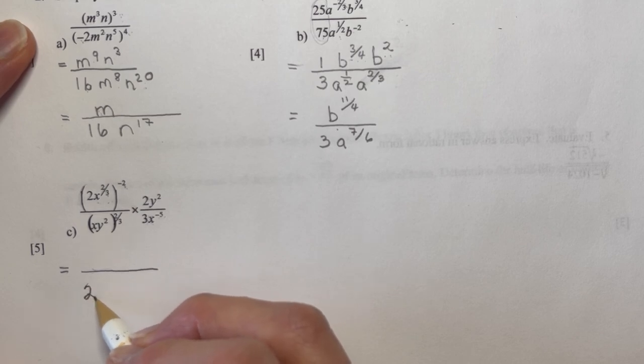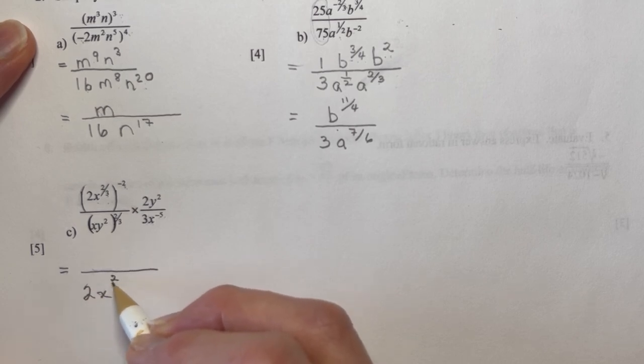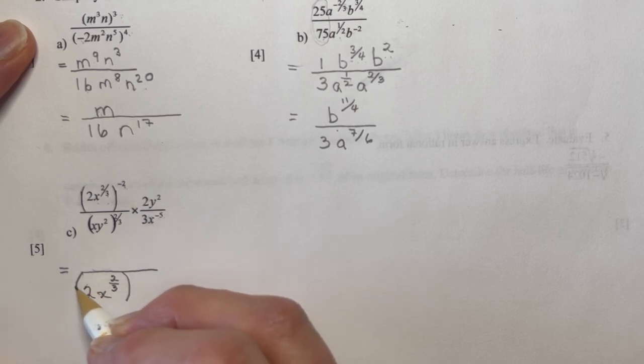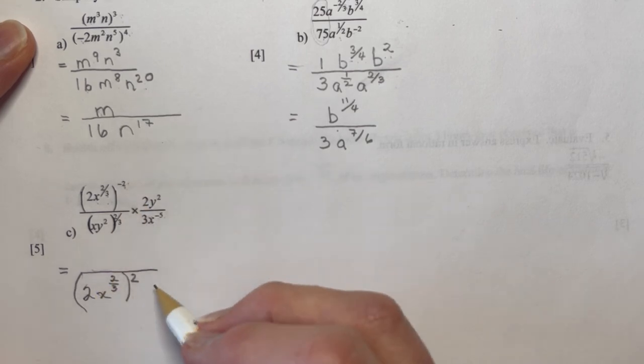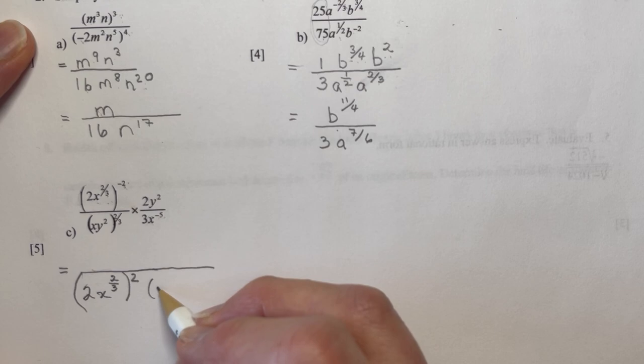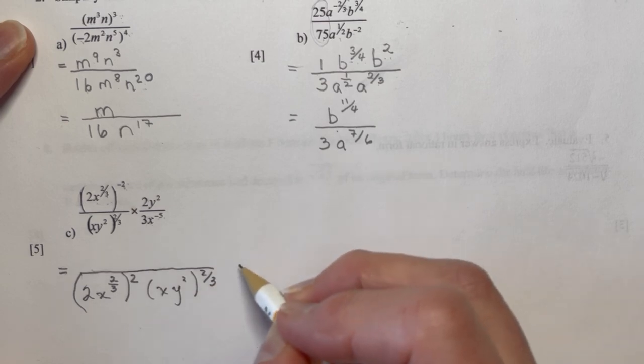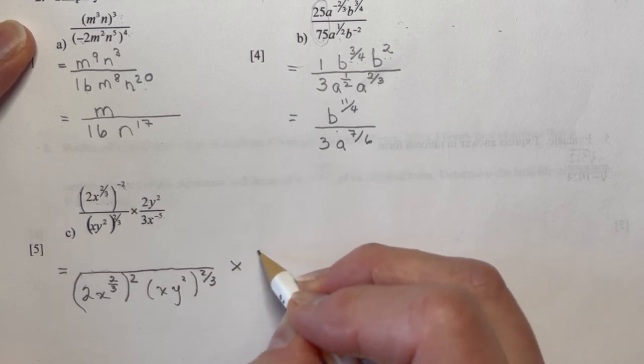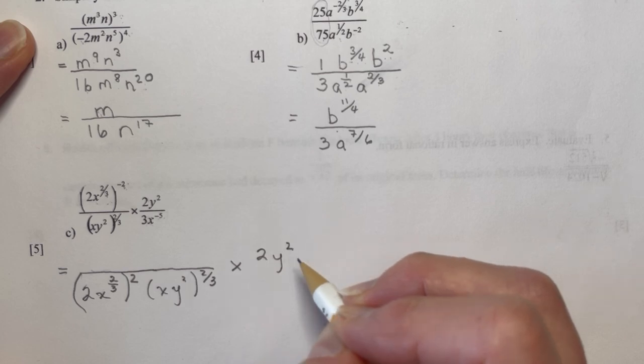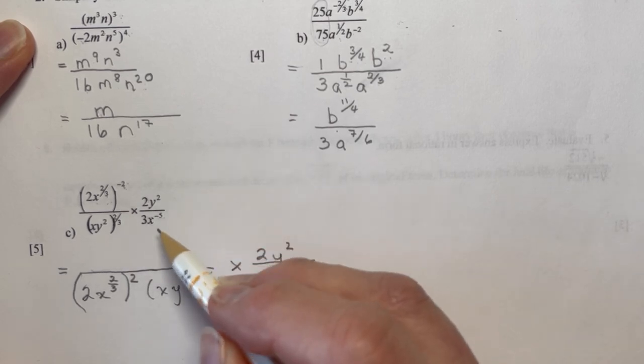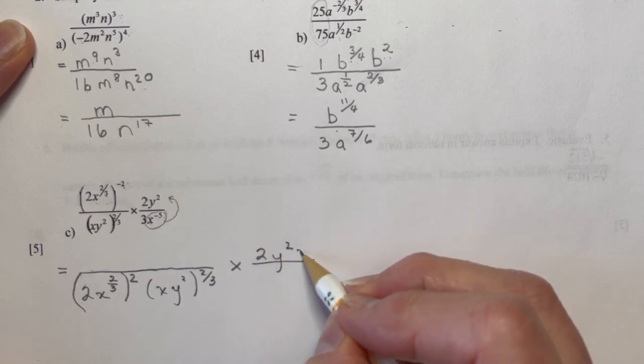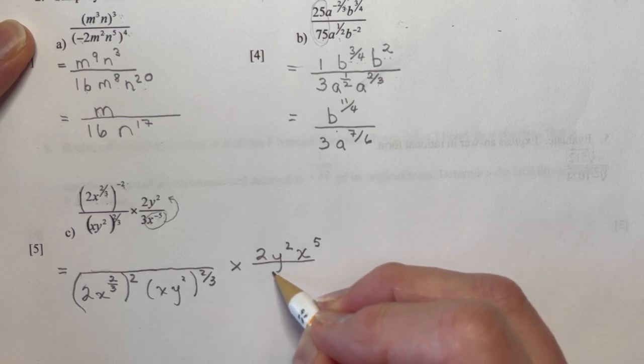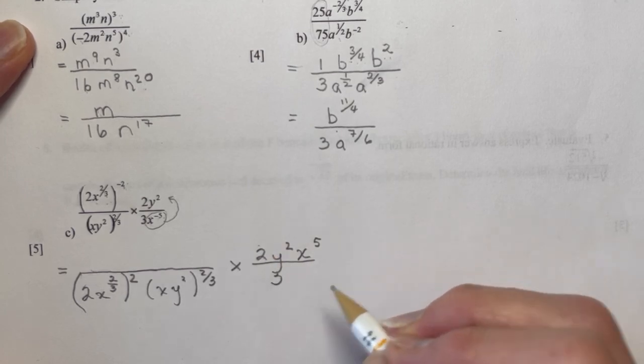So for this one, I'm going to move this 2x to the two-thirds to the minus 2 to the denominator. I'll do lots of steps here so you don't miss out on something. So this is 2x to the two-thirds and it's all squared, and it's in the denominator because I moved it down here. And I still have xy squared to the two-thirds here, and I'm still multiplying by 2y squared. Now I'm going to do a little magic here while I work on this one because this is to the negative exponent. I'm going to bring it up here. That's going to make it x to the fifth, and I still have two-thirds.